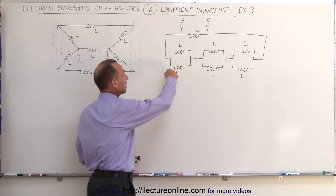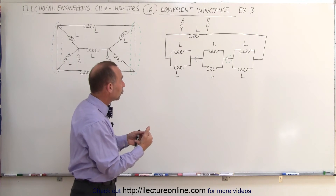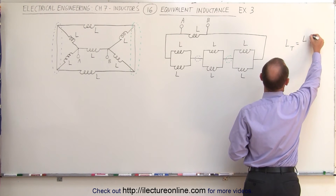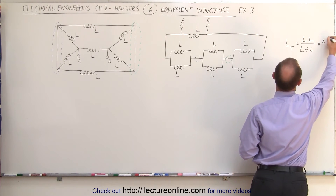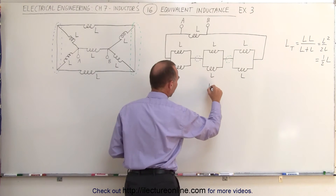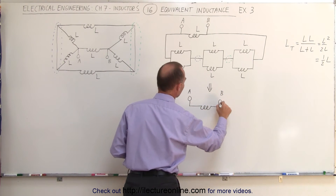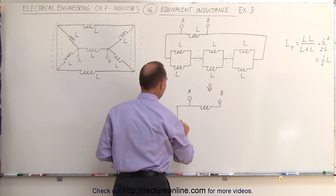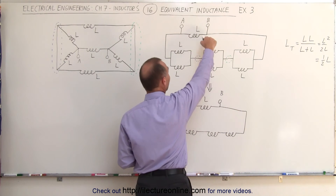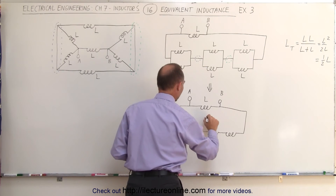Now we can go ahead and simplify each of the two branches. When we have two inductors in parallel with the same value, the equivalent inductance will be half that inductance. Using the product-over-sum rule: L total equals the first inductance times the second inductance divided by their sum, which gives us L squared divided by 2L, equal to one-half L. So we can draw the equivalent circuit: we still have the single inductor between A and B, and each parallel pair is now drawn as a single inductor with inductance L over 2.